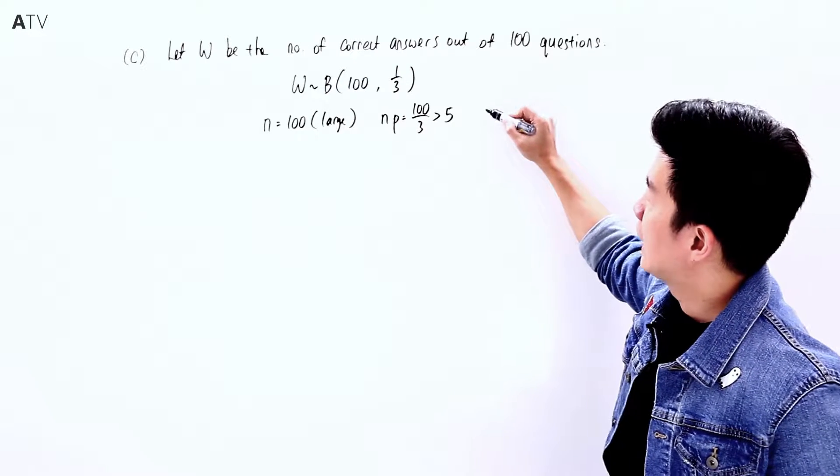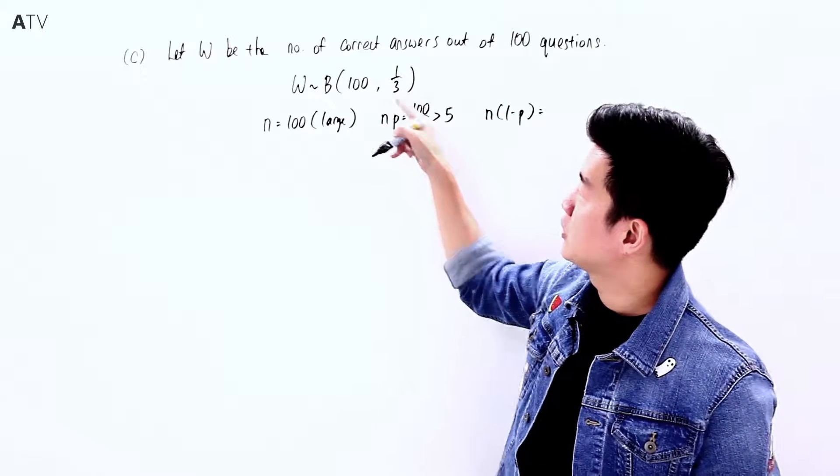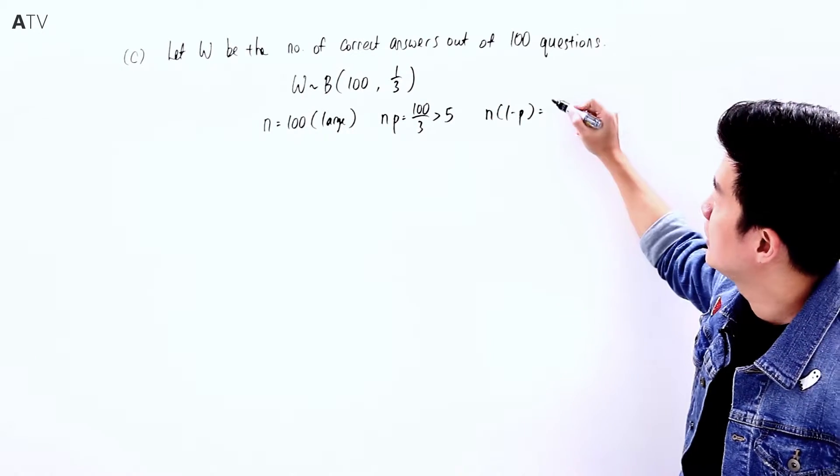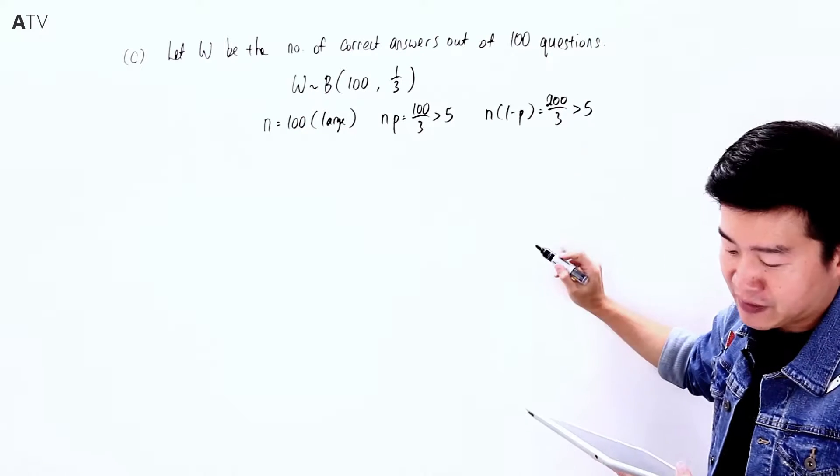Checking n(1-p), we get 100 × (1 - 1/3) = 100 × 2/3 = 200/3, which is also greater than 5.